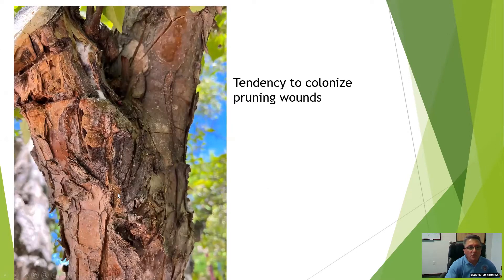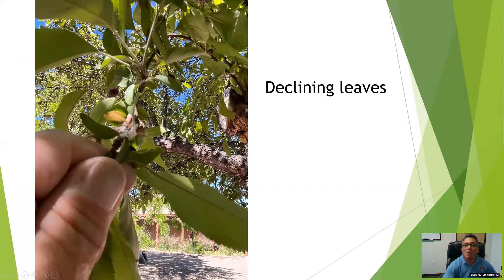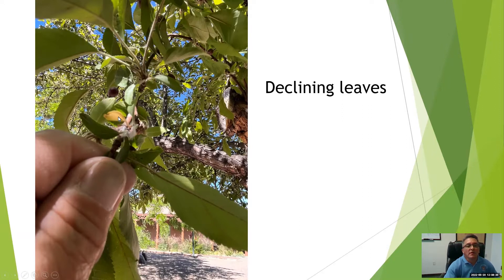Another interesting feature is that woolly apple aphids have a tendency to colonize pruning wounds. You can see woolly apple aphid colonies in this severed branch that had the bark peeled away. This photo was actually taken last week. This telltale sign of the decline of new leaves results from feeding near the leaf bud. Right here, a little off-focus, is the woolly apple aphid colony feeding on the stem near the leaf buds.